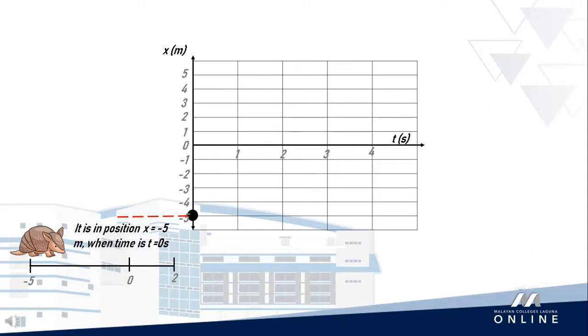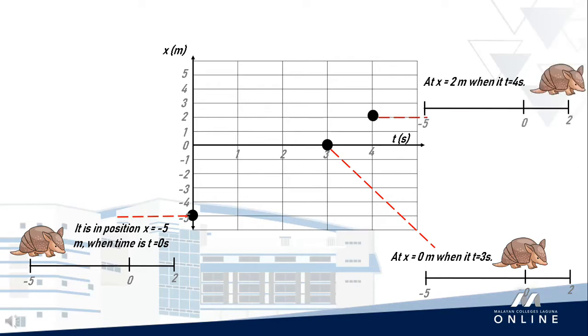It then moves towards x = 0, passing through this point at t = 3 seconds, and then moves on to increasing larger positive values of x. We connect these three points, and we will have the path associated with the movement of this animal from -5 position going to positive 2 meters.